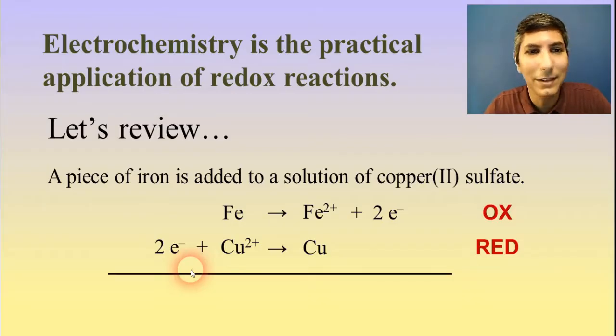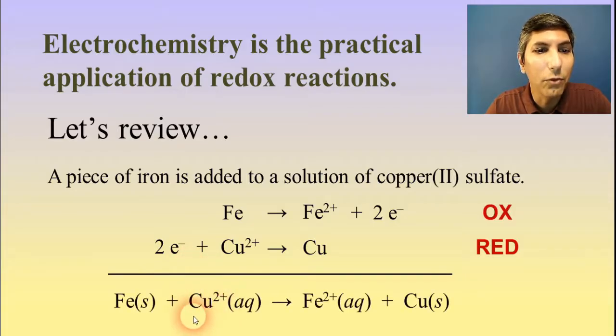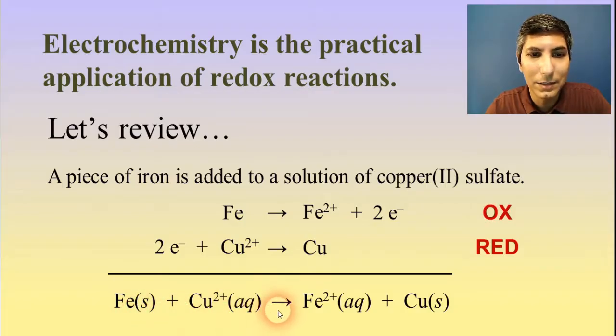So now we can take these two half reactions and add them together. And you get the overall balanced redox reaction. So we have iron solid and copper two aqueous ions yield iron two ions aqueous and copper metal solid.